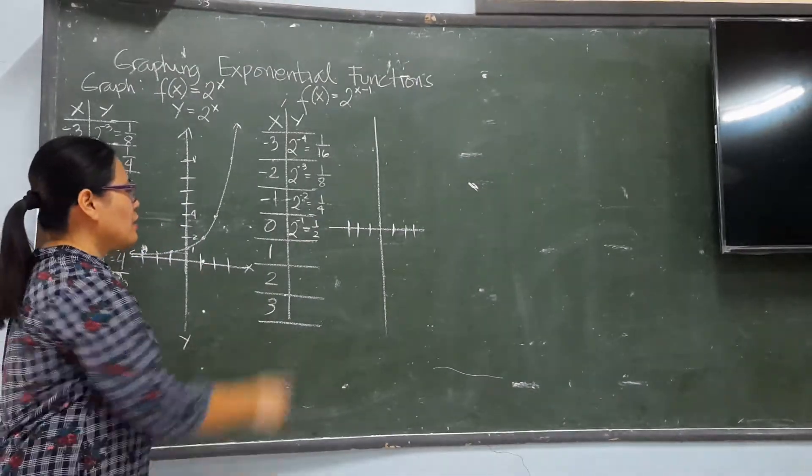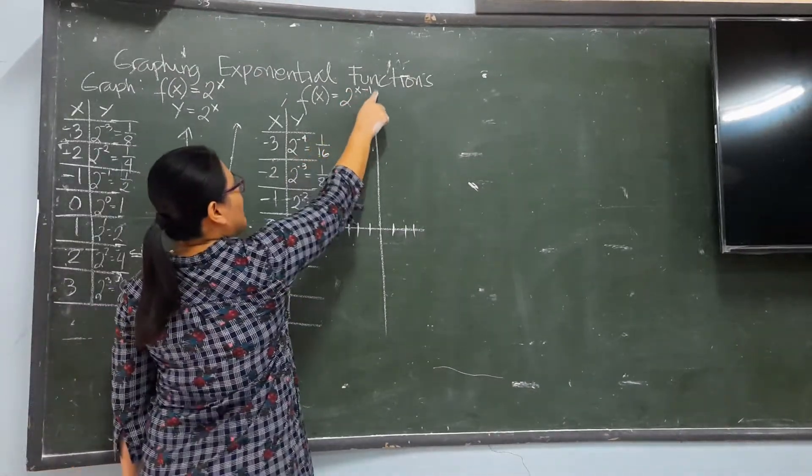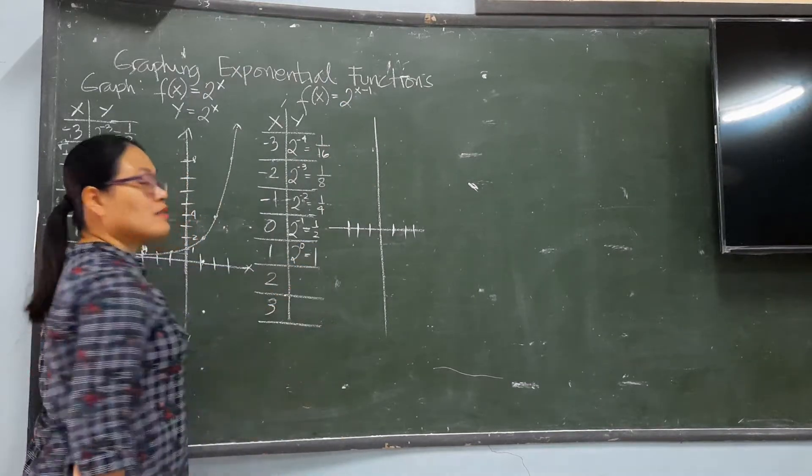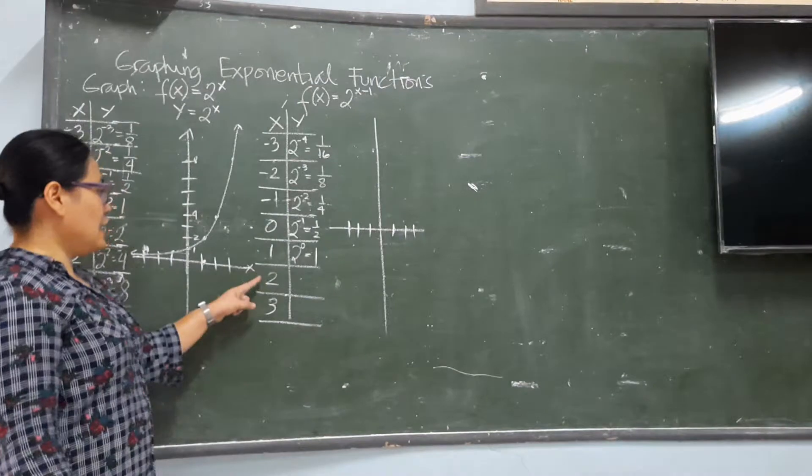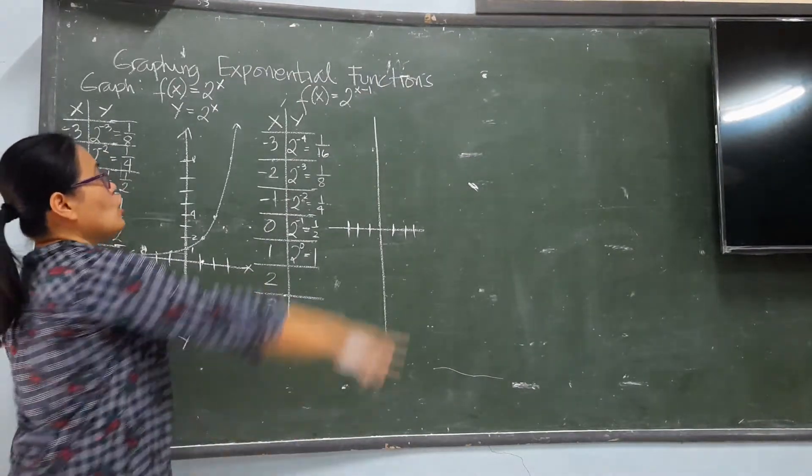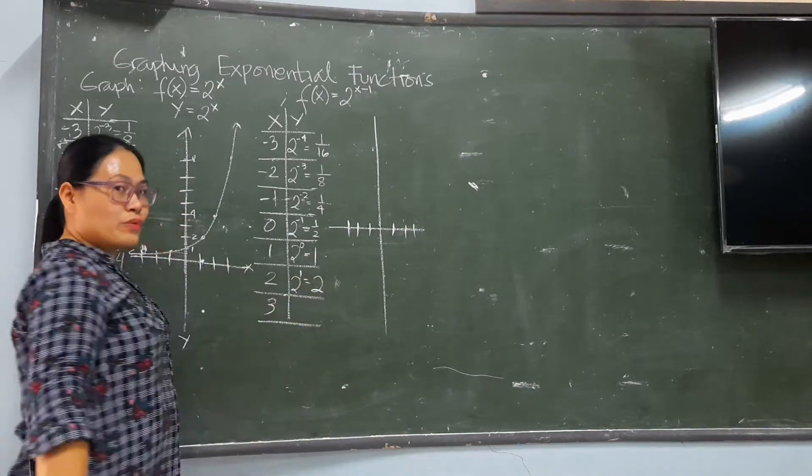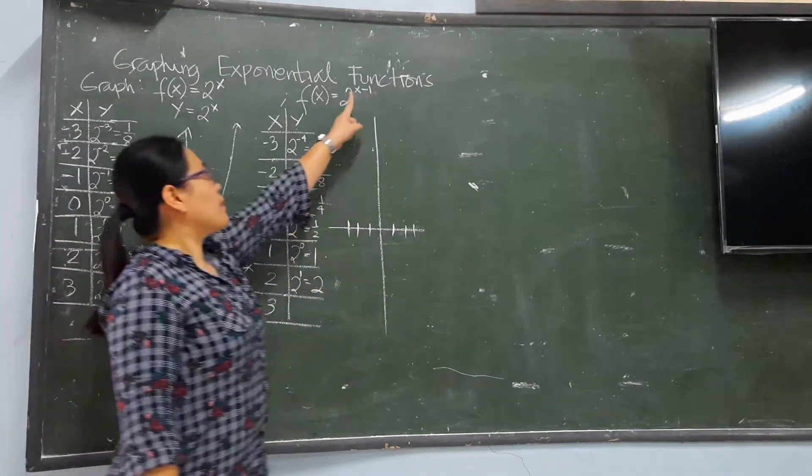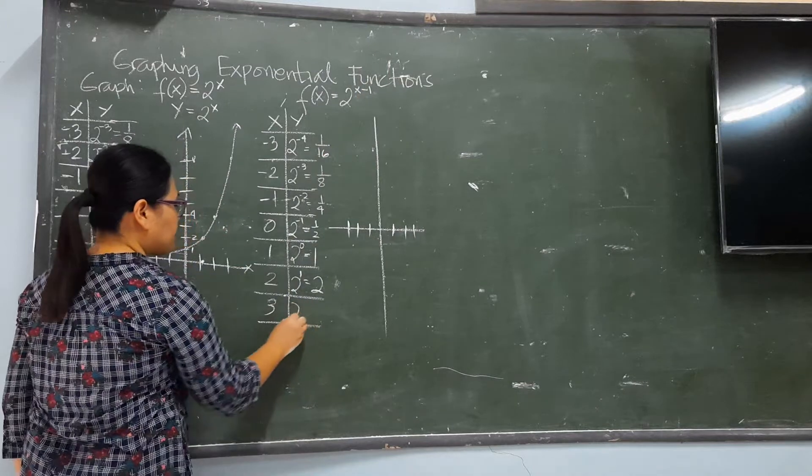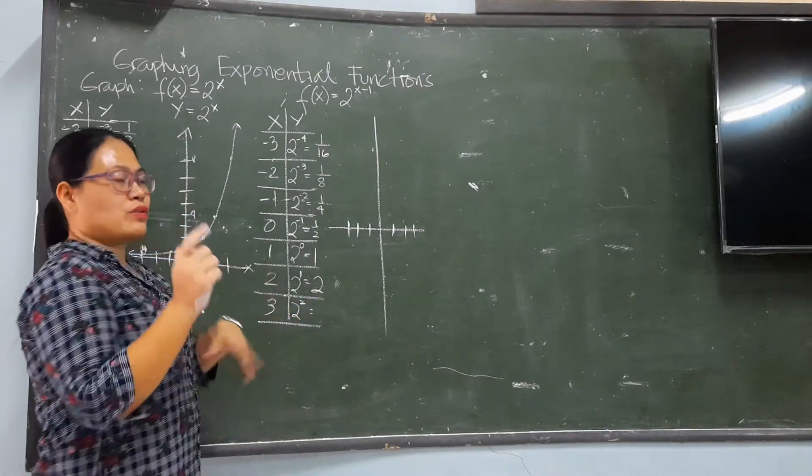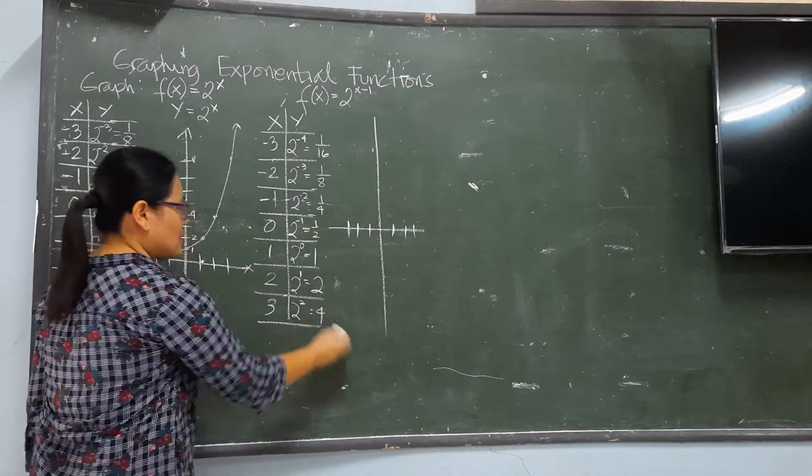1 minus 1. So, it is 2 to the power of 0, it is 1. In here, 2 minus 1 is 1. So, 2. And 3 minus 1 raised to the power of 2. Because, 3 minus 1 is 2. So, the answer is 4.